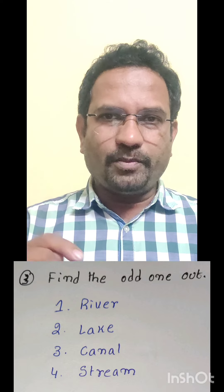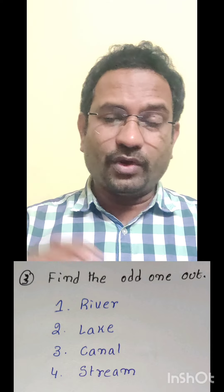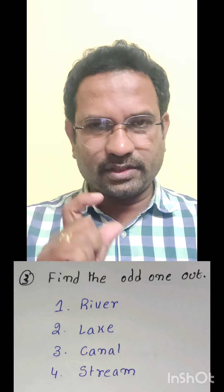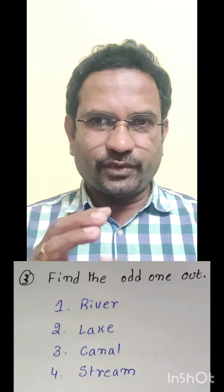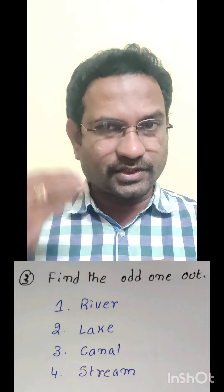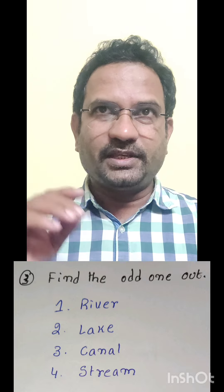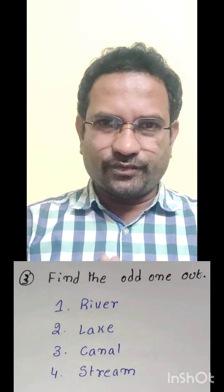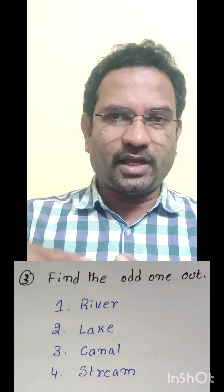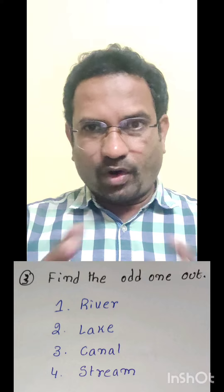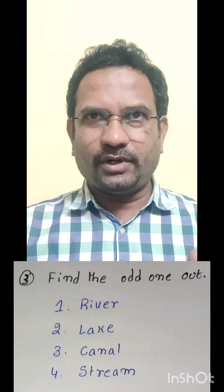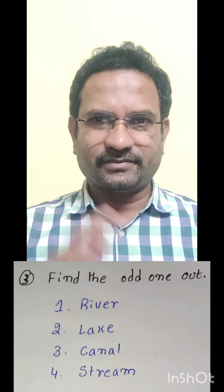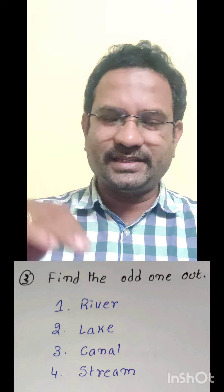Next question: Find the odd man out. Four options are given — river, lake, canal, stream. Out of these four, three words belong to a similar category. When you look at river, canal, and stream, all of them are flowing bodies — water flows in river, canal, and stream. In a lake, water is stagnant; it will not flow. So out of the four, lake is the correct answer because the water body is there but water does not flow. This is how you need to deduce a relationship.